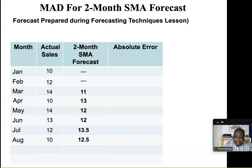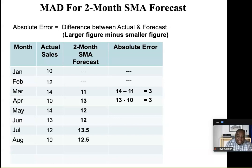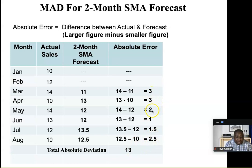We did this forecast in the earlier lecture where we looked at a two-month simple moving average and we had a forecast. For the first two months we didn't have a forecast, so we just ignore those months. Starting with March: bigger figure 14 minus 11 = 3. April: 13 minus 10 = 3. For May: 14 minus 12 = 2. For June: 13 minus 12 = 1. July: 13.5 minus 12 = 1.5. August: 12.5 minus 12 = 0.5. And here we have the absolute error for each of these forecasts. Adding them up, we get a total of 13: 3 plus 3 = 6, plus 2, 1, and 1.5 and 0.5.